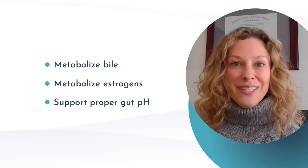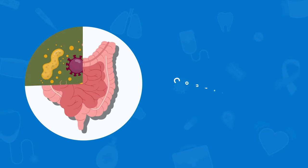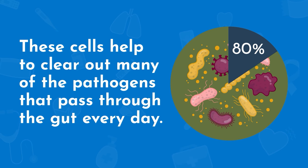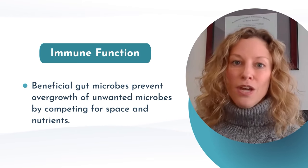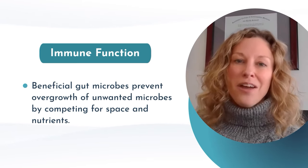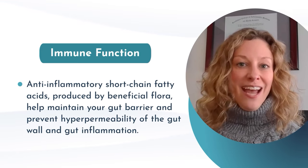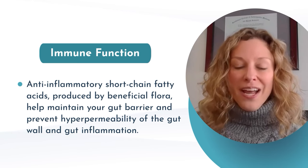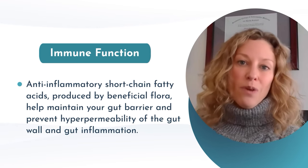The microbiome also influences our immune system. Beneficial microbes in your gut help to train your immune system. In fact, your gut is your largest immune system organ, containing up to 80% of your body's immune cells. These cells help to clear out many of the pathogens that pass through the gut every day. Helpful gut microbes also compete directly with non-beneficial microbes for real estate and nutrients in the gut, preventing non-beneficial microbes from taking over too much territory within the digestive tract. The short chain fatty acids made by the beneficial flora are actually anti-inflammatory and support a healthy gut barrier, keeping bacteria and bacterial toxins inside the intestine so that they don't escape into our bloodstream.